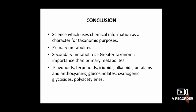In summary, this lecture covered phytochemistry in relation to taxonomy. Based on chemical constituents or chemical information, the plants are classified. We studied primary metabolites and secondary metabolites, which are of greater taxonomic importance. The secondary metabolites discussed include flavonoids, terpenes, terpenoids, iridoids, alkaloids, betalains, anthocyanins, glucosinolates, cyanogenic glycosides, and polyacetylenes.